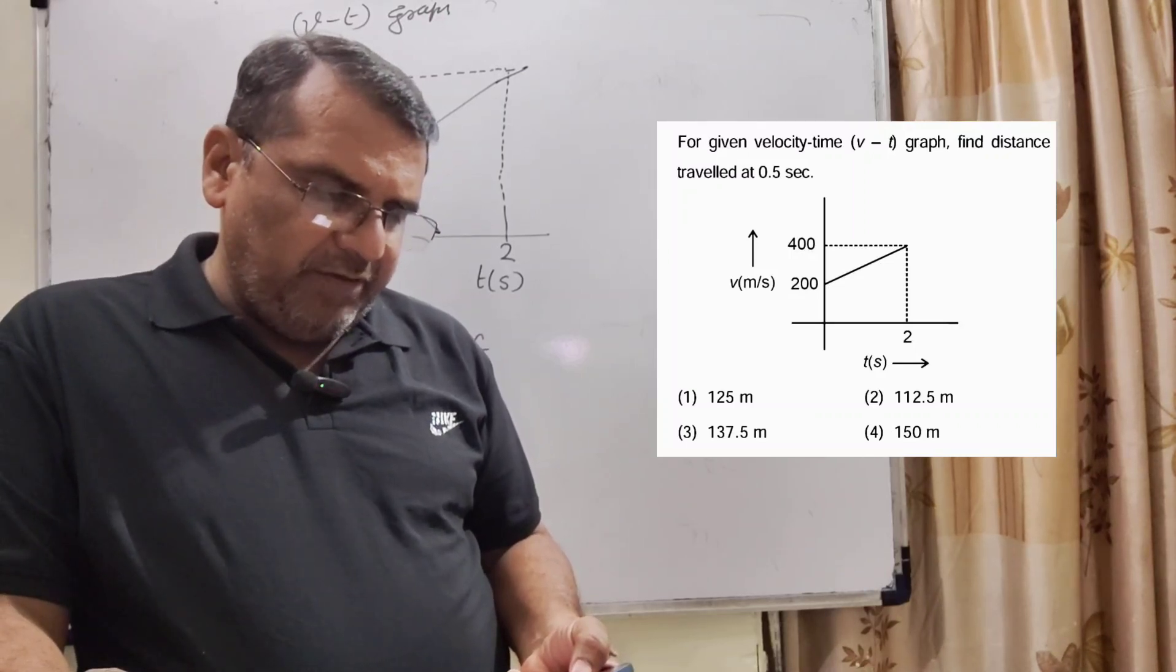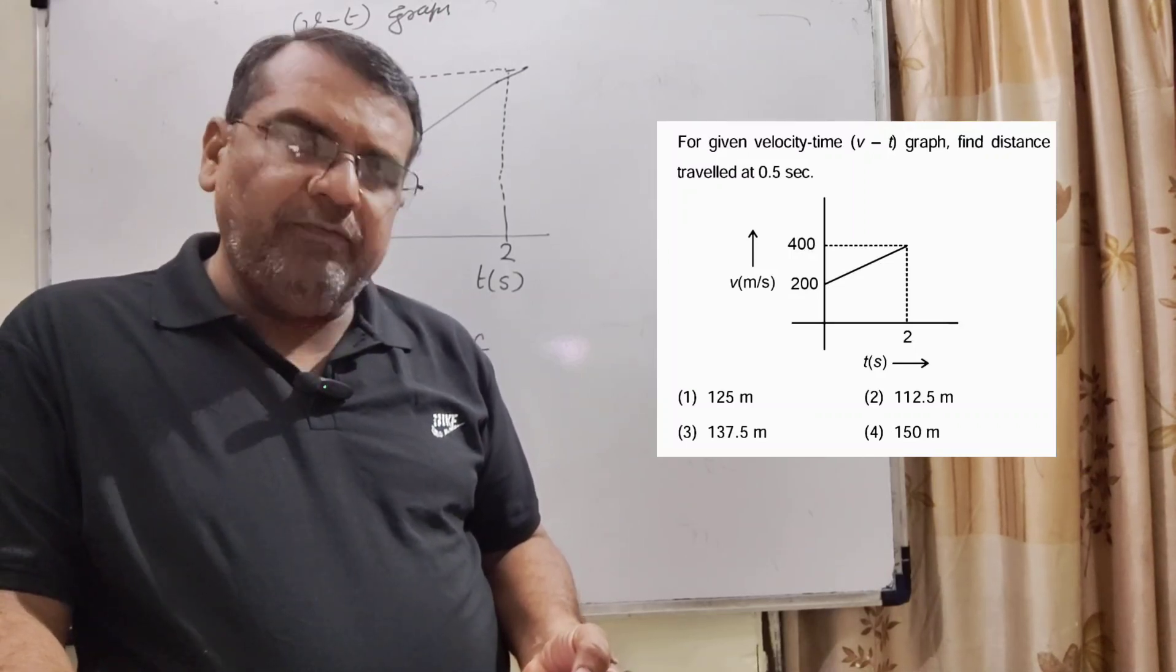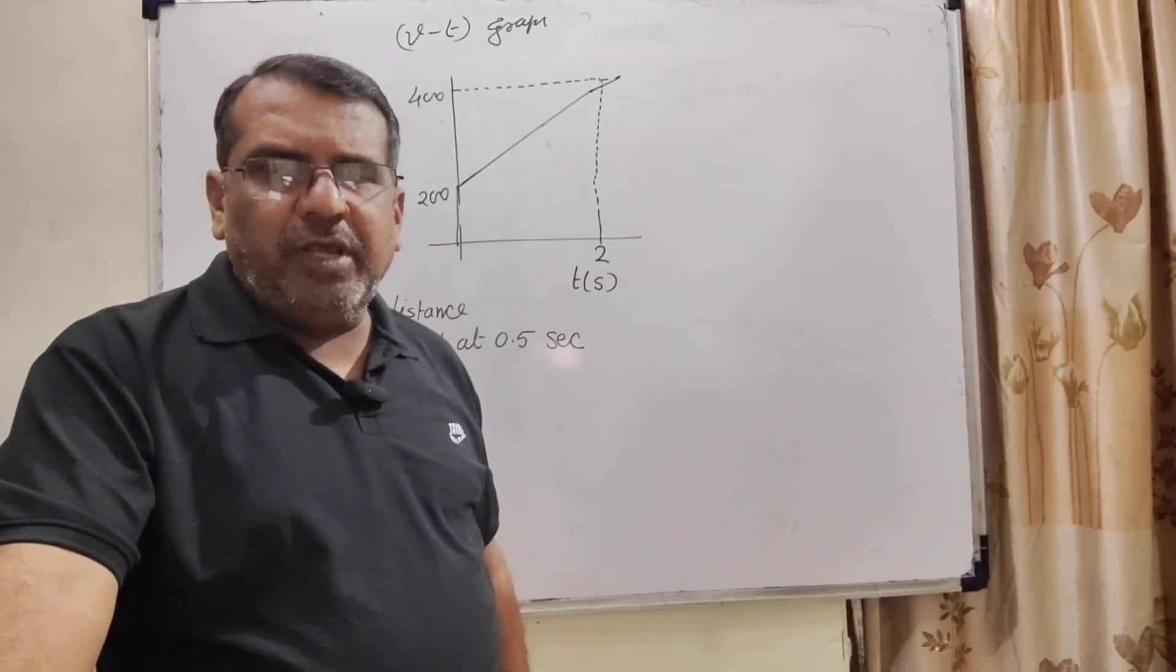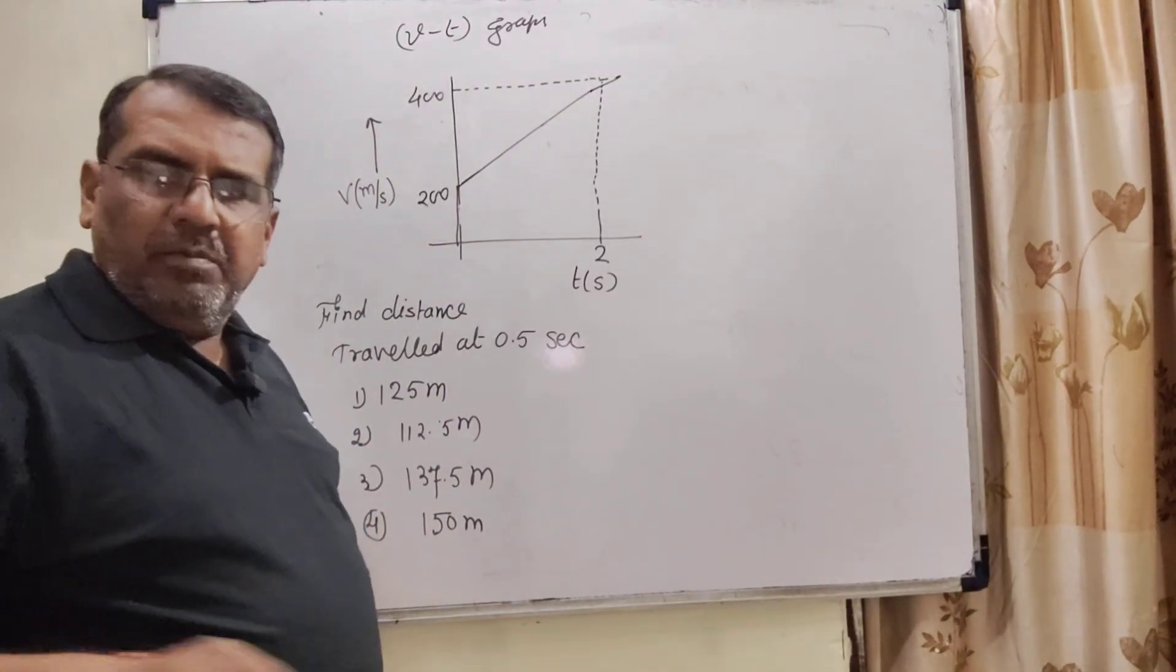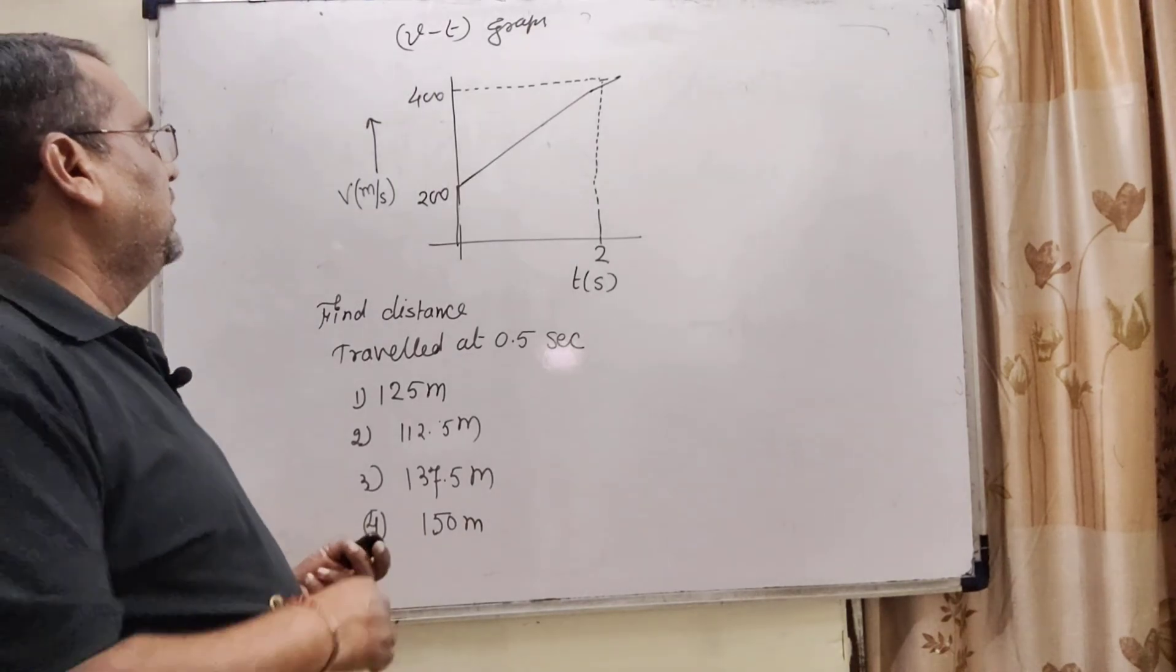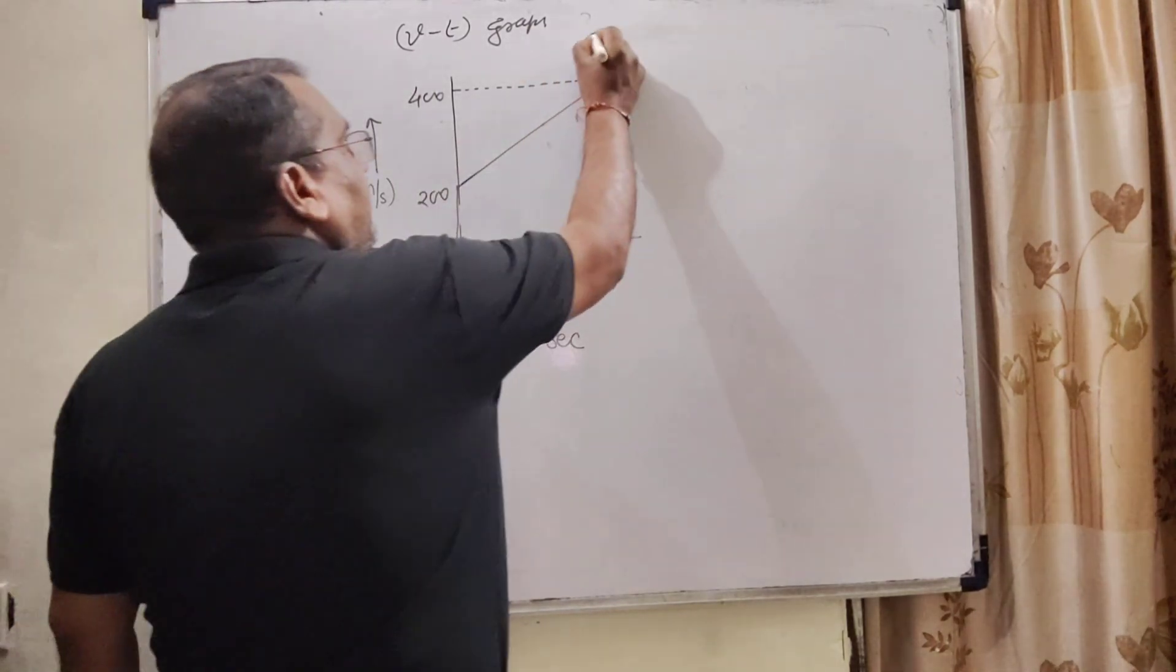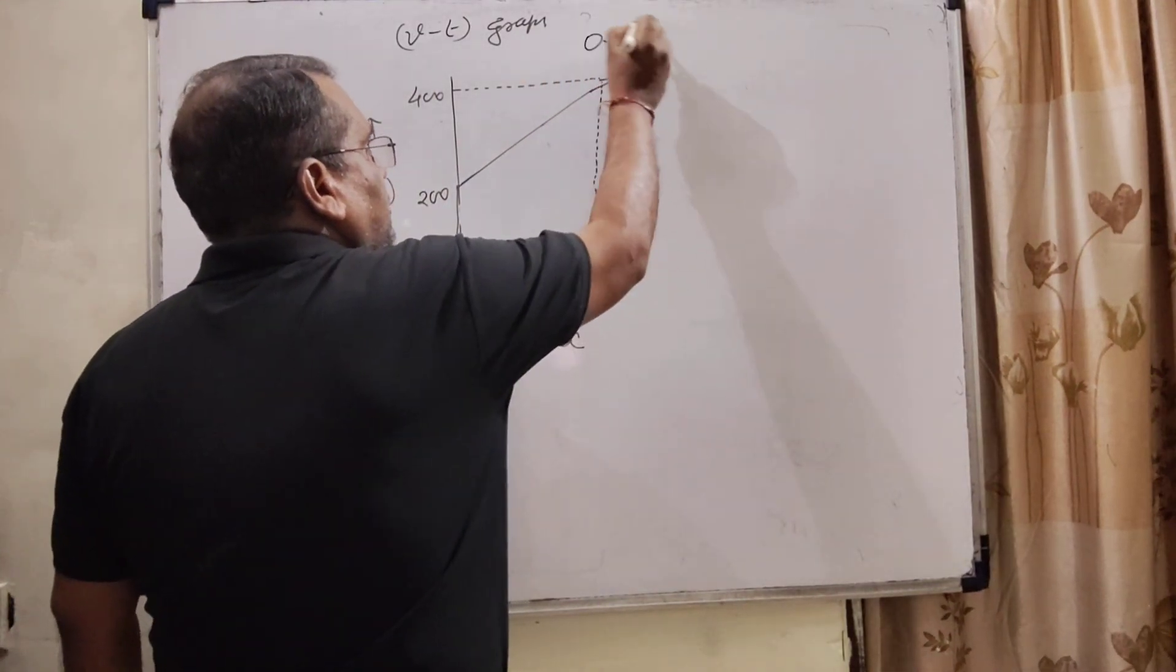Option 3rd, 137.5 meter. And option 4th, 150 meter. If we had to calculate the distance covered in 2 second, it would have been easy. But here we are asked the distance covered in 0.5 second.